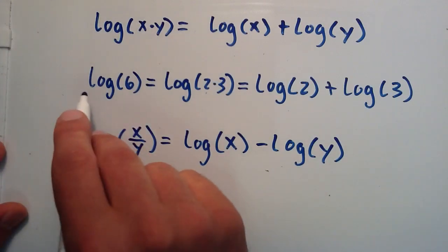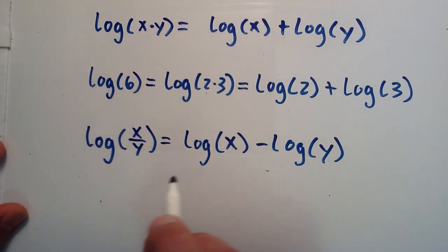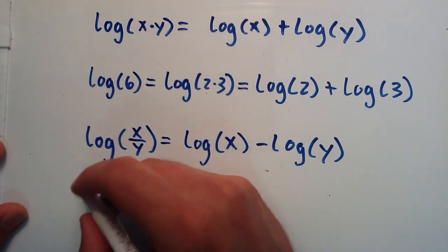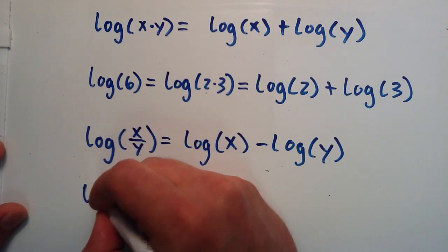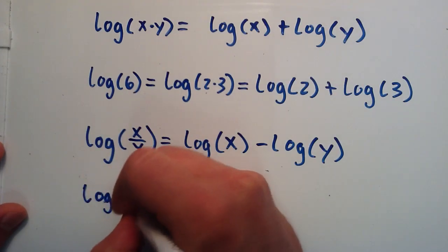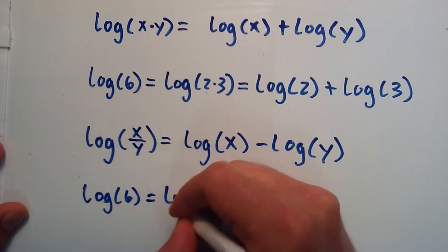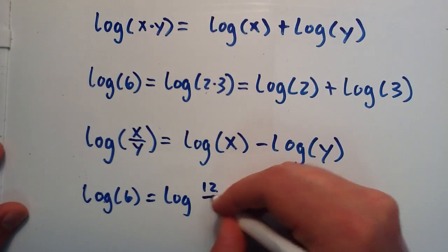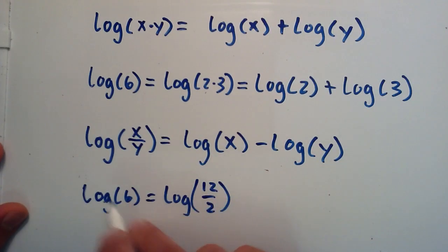So if we wanted to rewrite the log of 6 as a subtraction of logs, then we could simply rewrite log 6 as the log of 12 divided by 2, because 12 divided by 2 is equal to 6.